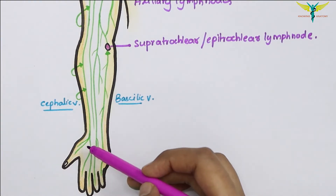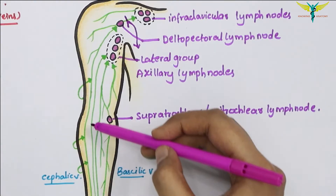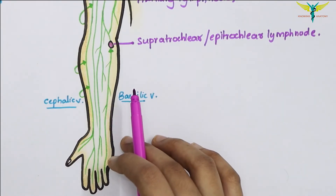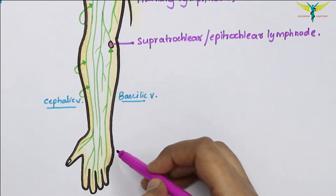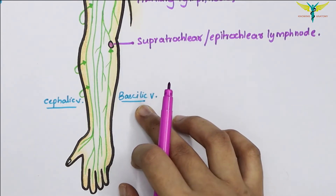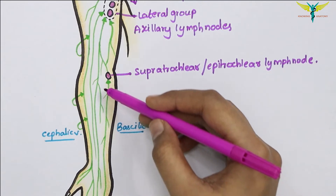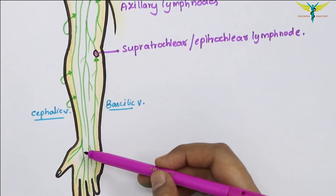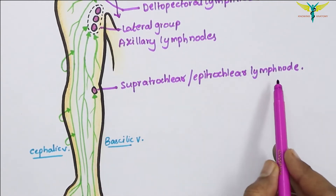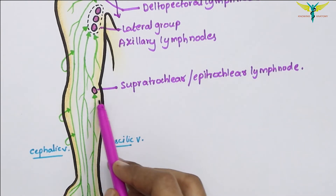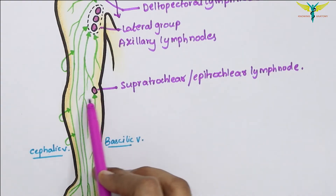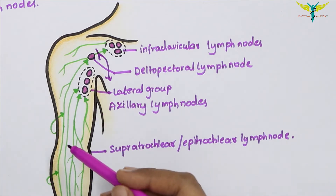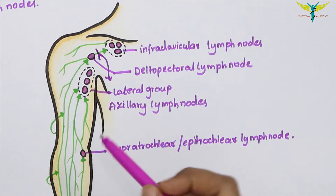To summarize the course: lymph vessels from the lateral side — the lateral two digits — follow the cephalic vein and drain into the infraclavicular lymph nodes. Lymph vessels from the medial side — the medial three digits — follow the basilic vein and drain into the axillary lymph nodes. Some medial lymph vessels terminate into the supratrochlear or epitrochlear lymph node, which lies just above the medial epicondyle along the basilic vein.